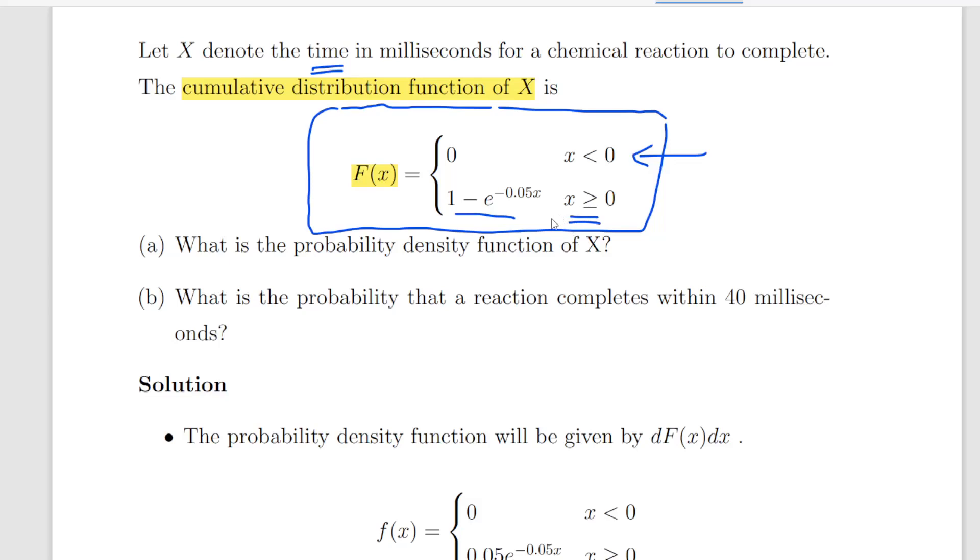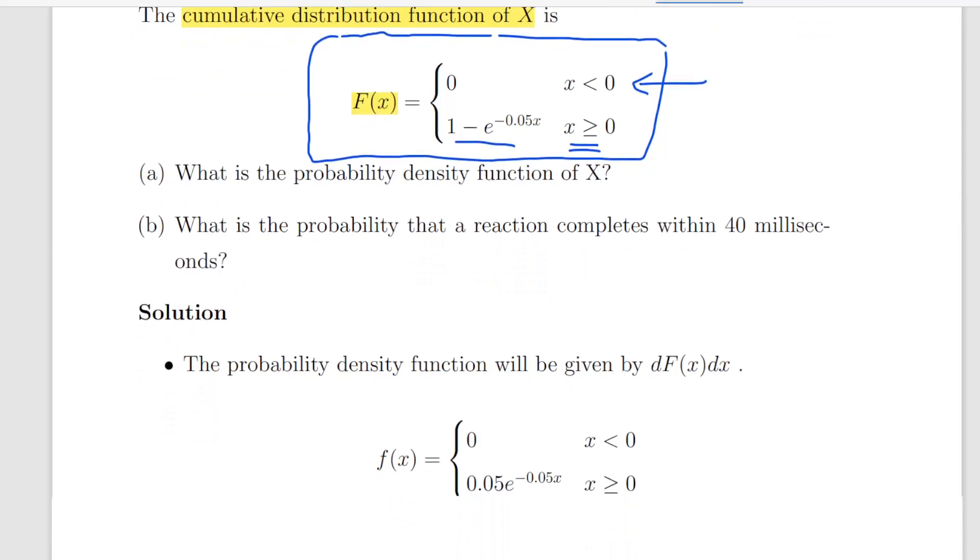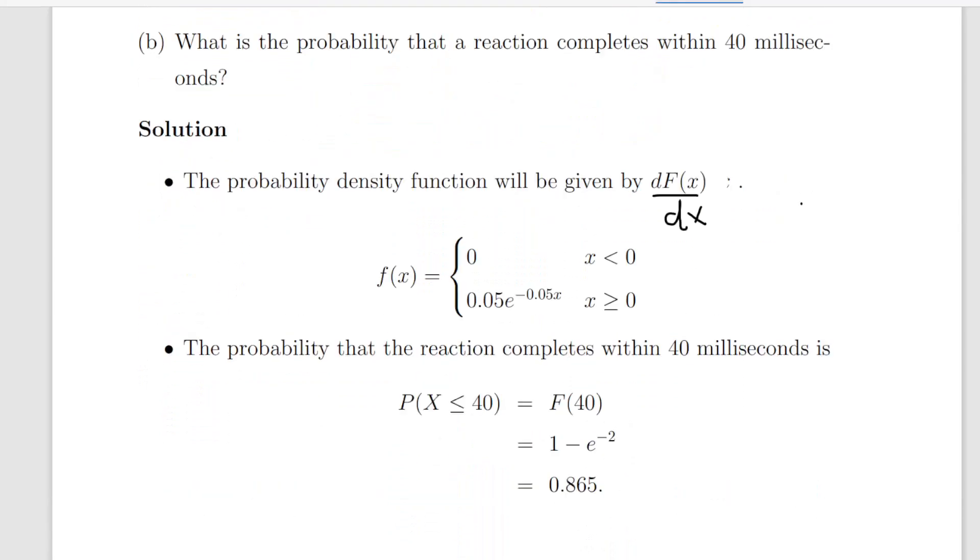So the two questions are what is the probability density function of X and what is the probability that a reaction completes within 40 milliseconds. I just paused it there for a second to correct a little mistake. So the probability density function is given by d of capital F of x dx. That is to say it is the derivative with respect to x of the cumulative distribution function.